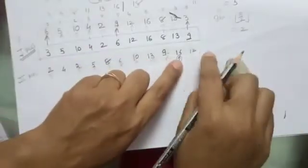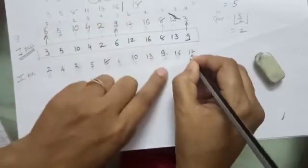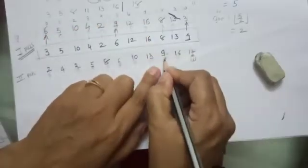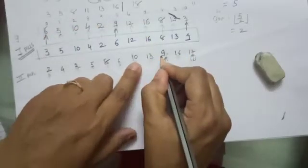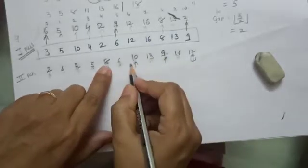We do not have any element on this side, so now let us shift the pointer to 12. We will compare this with the gap of 2. 9 and 9 here also it is greater. Here it is smaller.